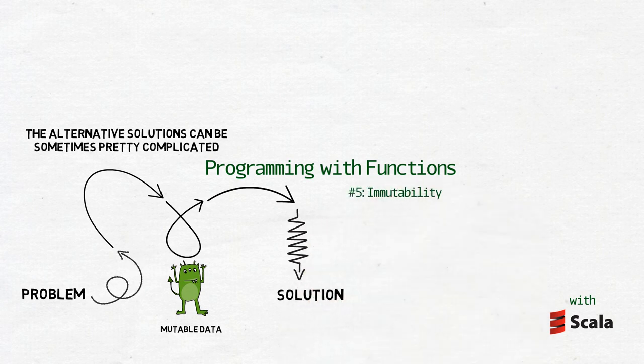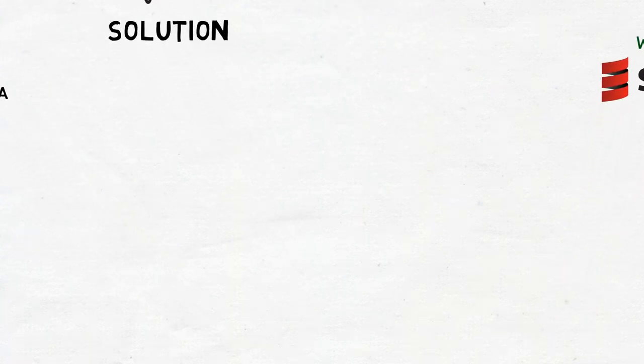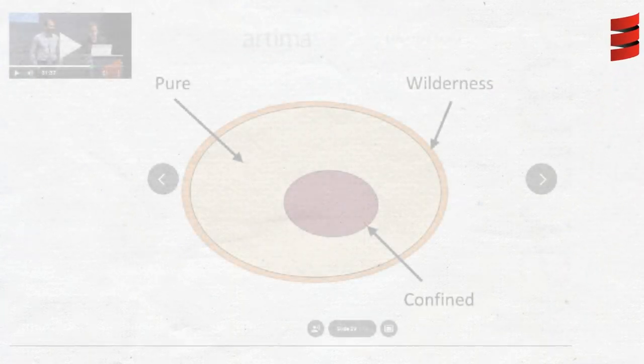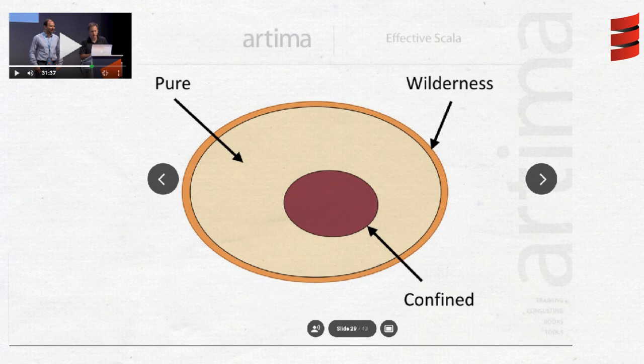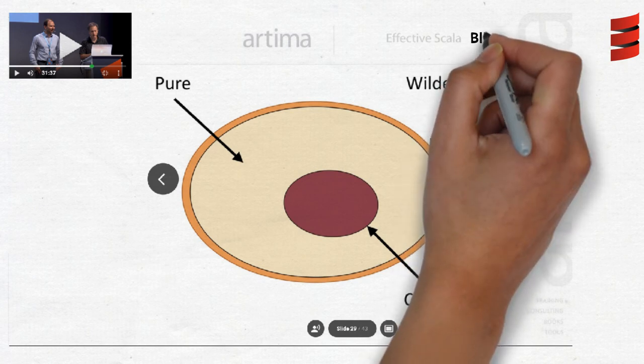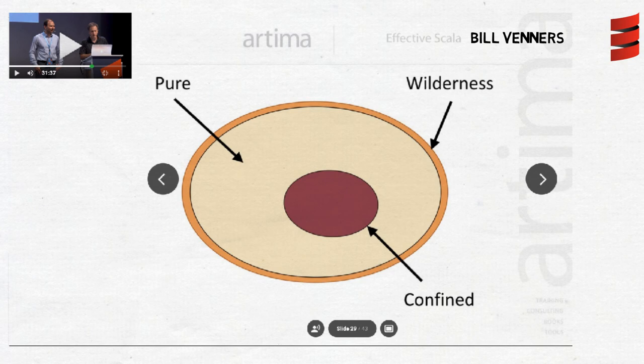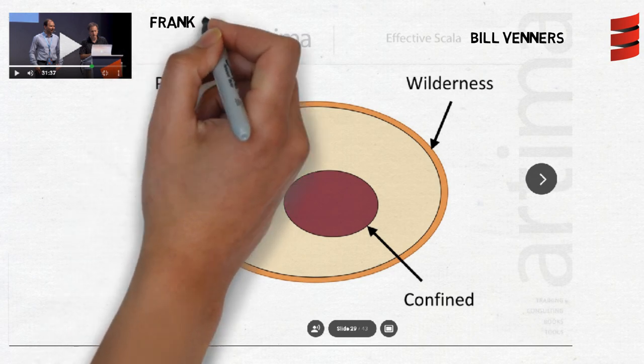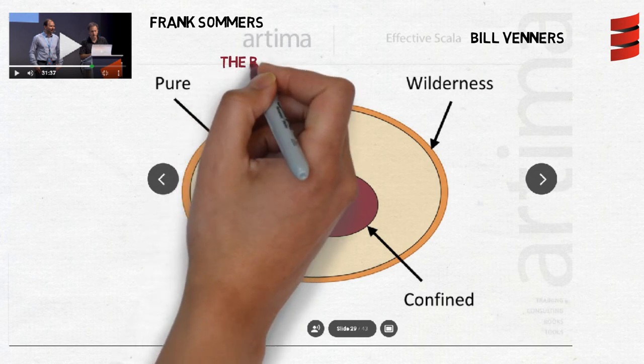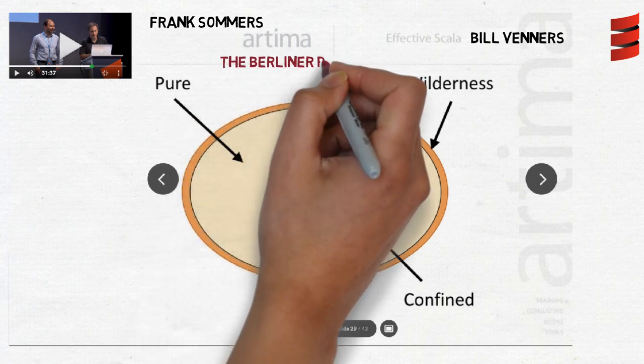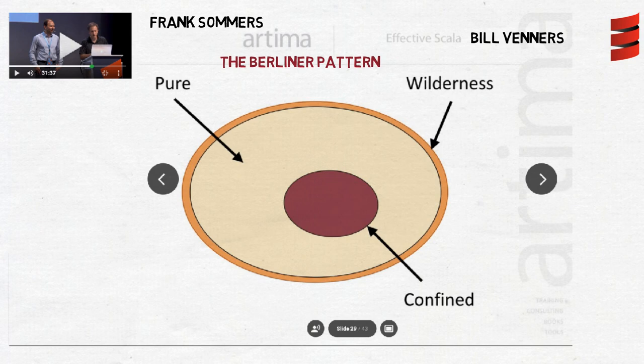Scala, from the very beginning, was designed to connect both worlds. So instead of trying to avoid mutability at all costs, I'd like to point you to the talk on Effective Scala from ScalaDays 2018 in Berlin by Bill Venners and Frank Sommers and their concepts of the Berliner architectural pattern. In short,